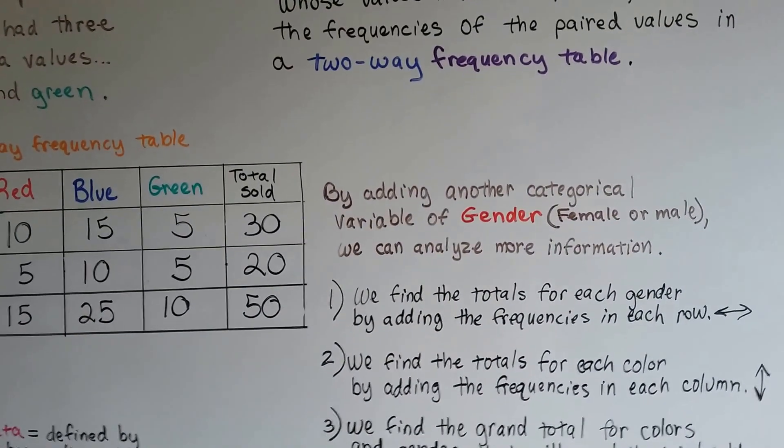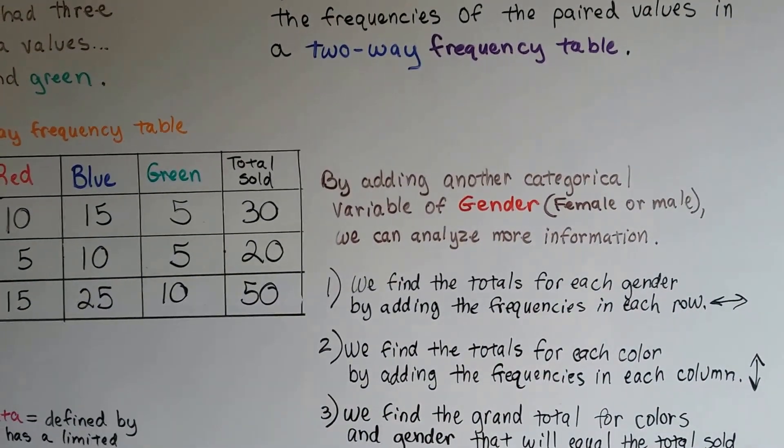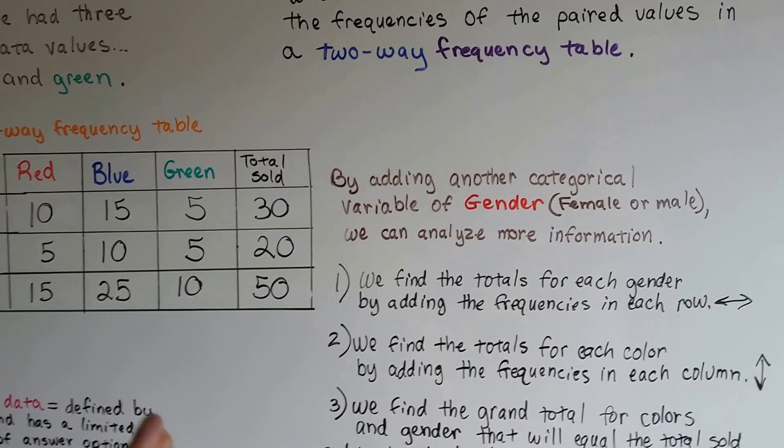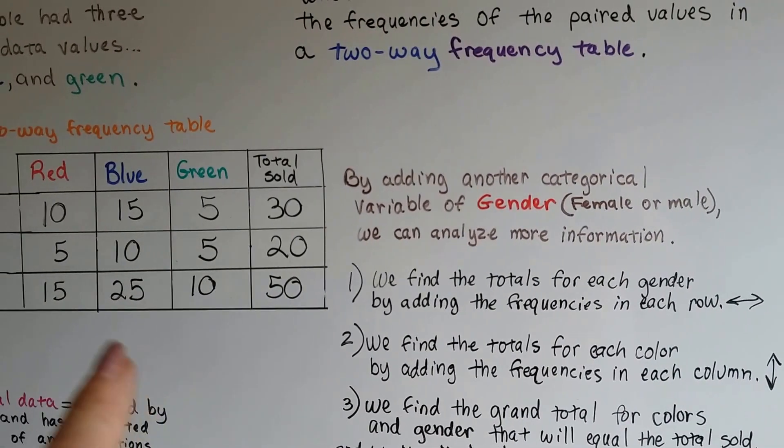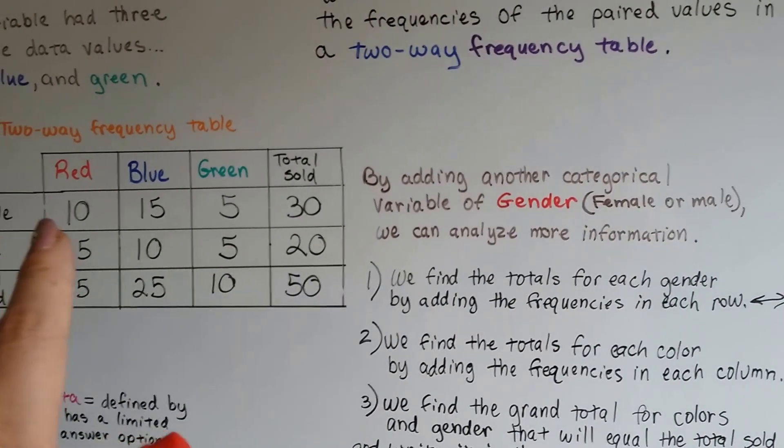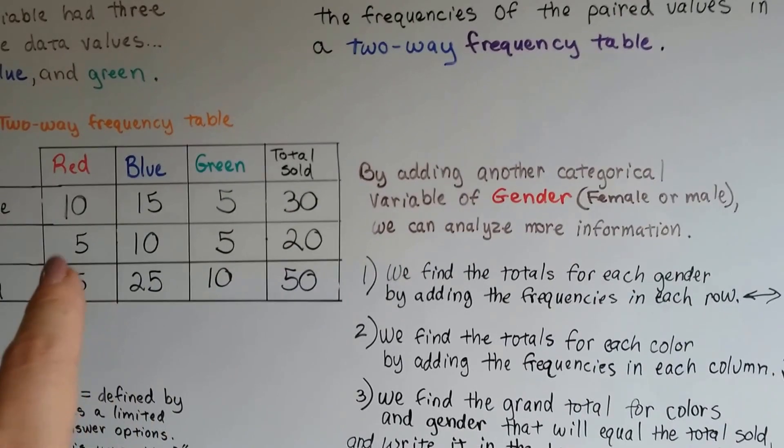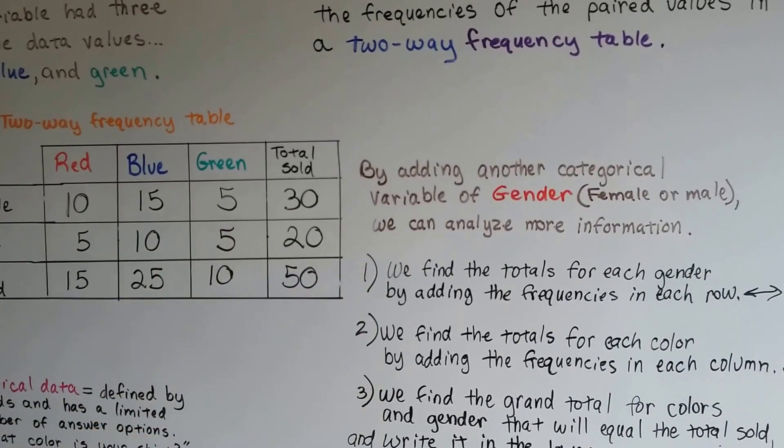By adding another categorical variable of gender, male or female, we can analyze more information. The first thing we do is we find the totals for each gender by adding the frequencies in each row. Female is 10 plus 15 plus 5, that's 30. And male is 5 and 10 and 5, that's 20.